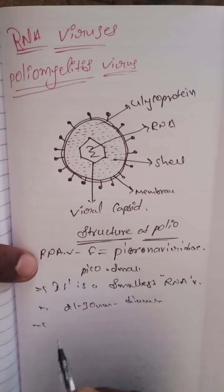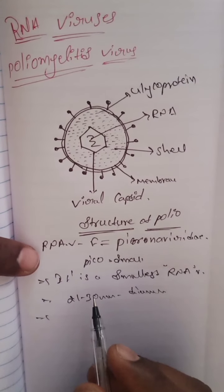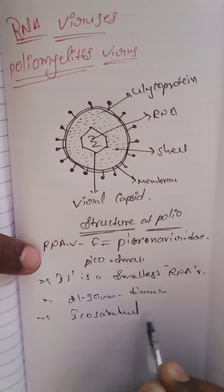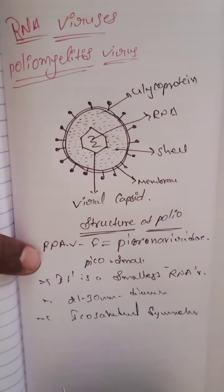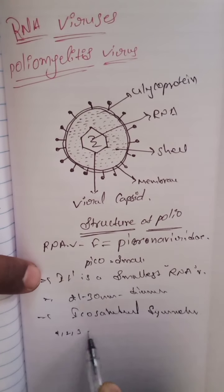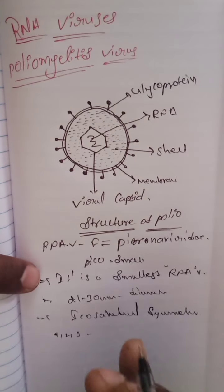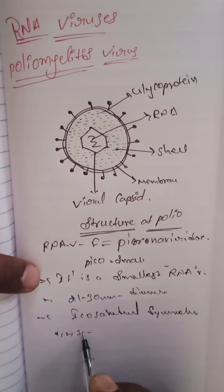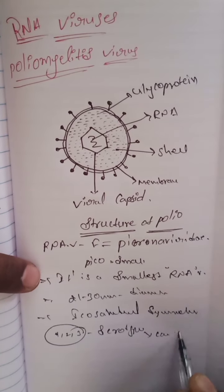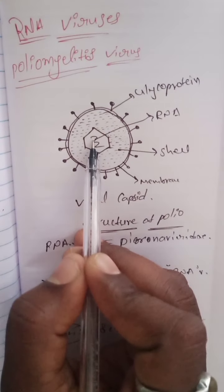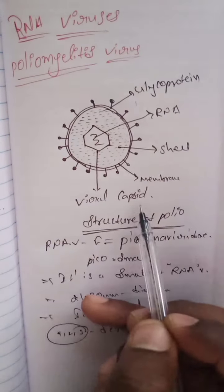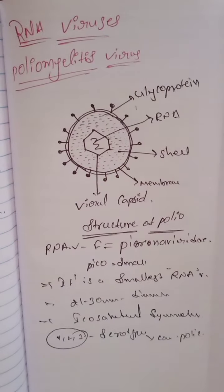This virus is naked and has icosahedral symmetry. It contains three serotypes — one, two, and three. Each serotype is capable of causing polio. The inside contains only RNA, and the outer shell is known as the viral capsid with glycoprotein. This is the introduction about the polio virus.